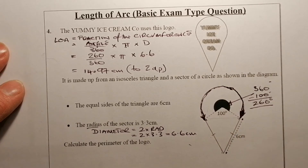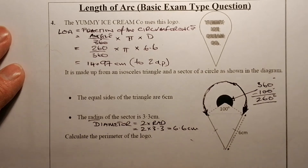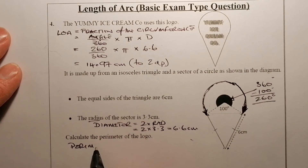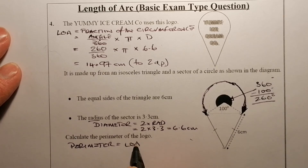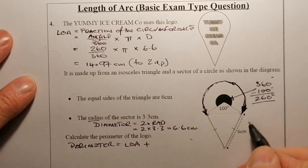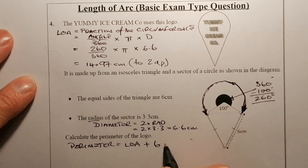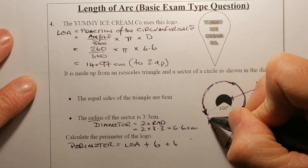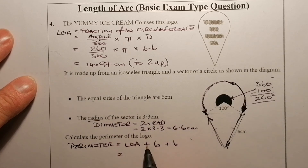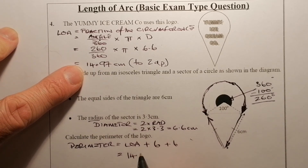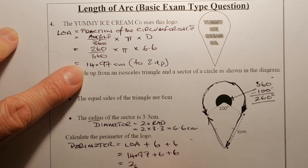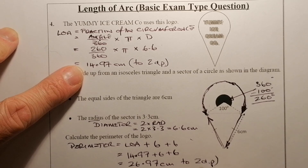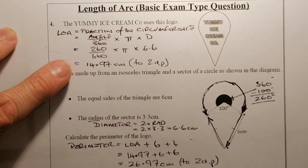Now we work out the full perimeter. The perimeter is the length of arc we've just worked out — 14.97 — plus this side of six centimeters and that side of six centimeters. Adding those together: 14.97 plus 12 gives 26.97 centimeters to two decimal places. That's the final answer.